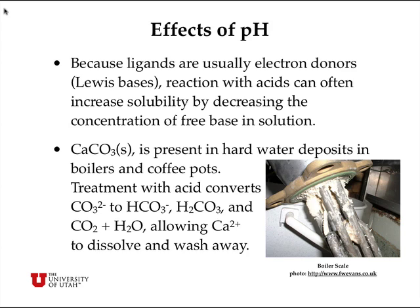Because ligands — the things that bind to metals — are usually electron donors, that is Lewis bases, we can react them with acids and thereby increase the solubility of the ionic salt by decreasing the concentration of free base in solution. An example is calcium carbonate, present in hard water deposits in boilers, coffee pots, and tea kettles. Treatment with an acid can convert the carbonate ion to the bicarbonate anion, which decreases the concentration of free carbonate and increases the solubility of calcium carbonate. The acid also converts carbonate to carbonic acid and CO₂, allowing calcium ions to dissolve and wash away.